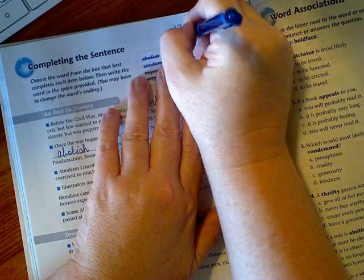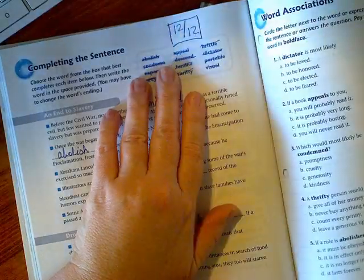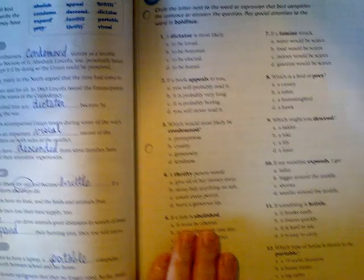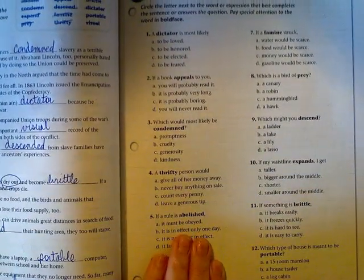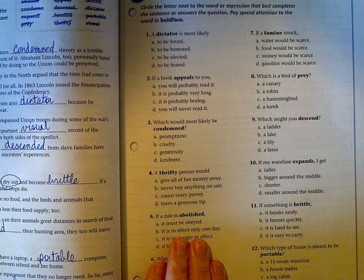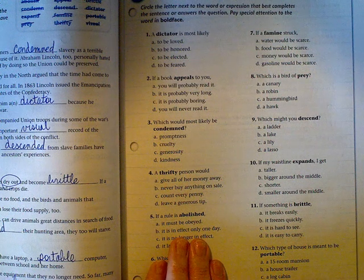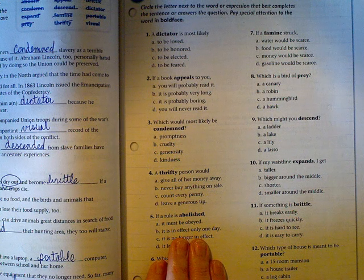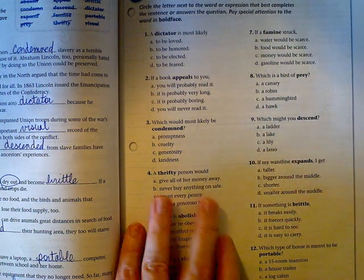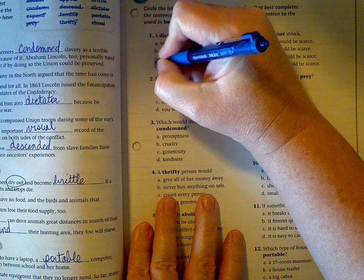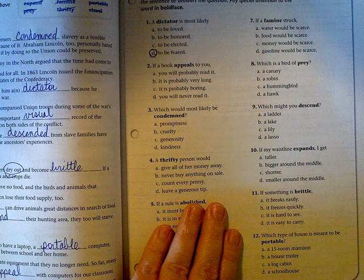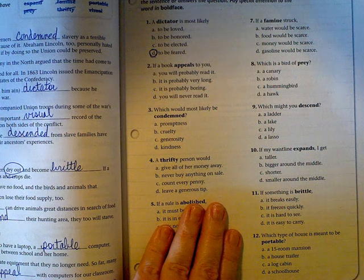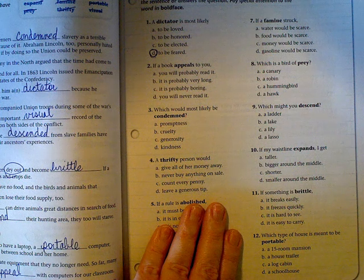Mark out how many you got right over 12 and box it in. Now we're moving over to page 105. A dictator is most likely to be loved? I don't think so. To be honored? I don't think so. To be elected? Not usually. To be feared? Letter D. If a book appeals to you, you will probably read it - that sounds good. Is it probably very long? Well, not for most. Is it probably boring? Well, that wouldn't appeal to you. You will never read it? No comment. Letter A.